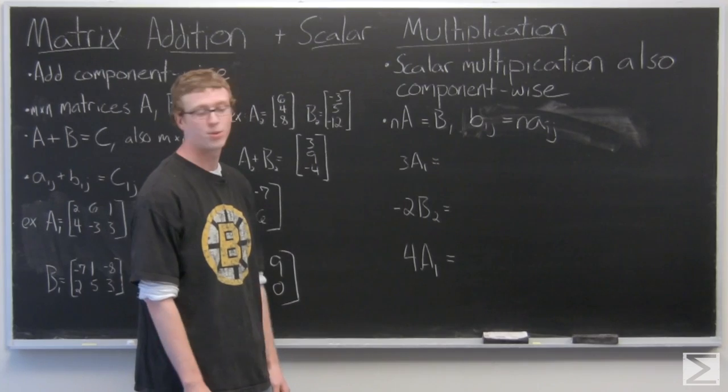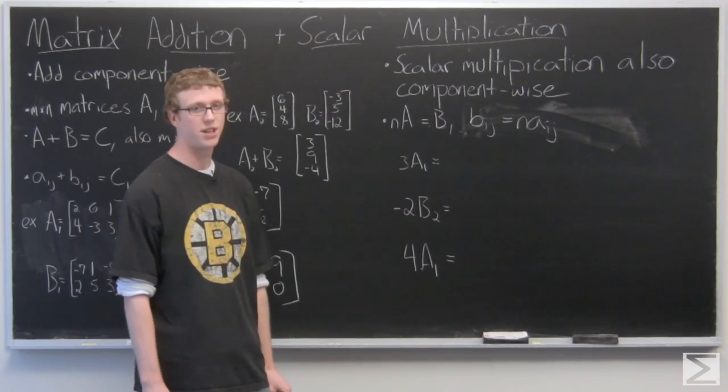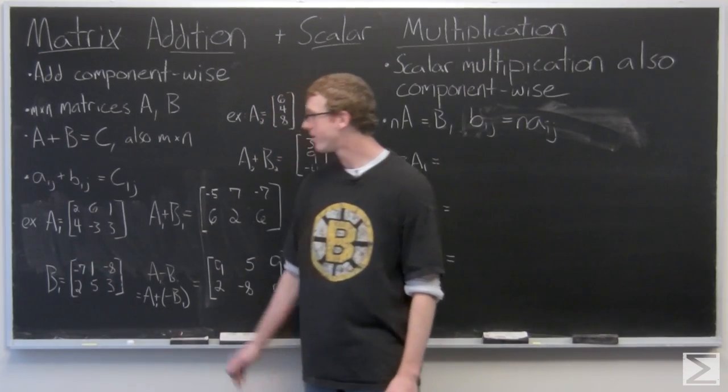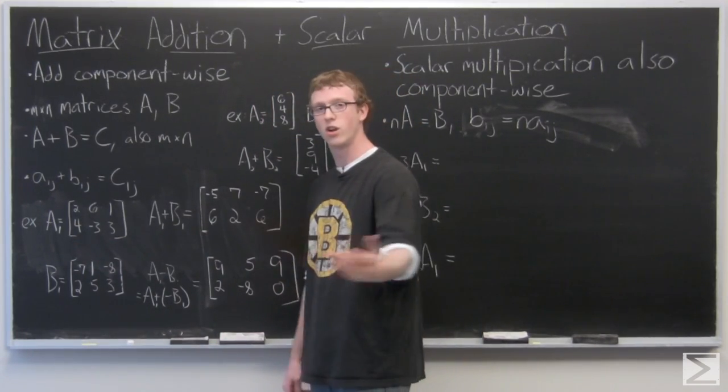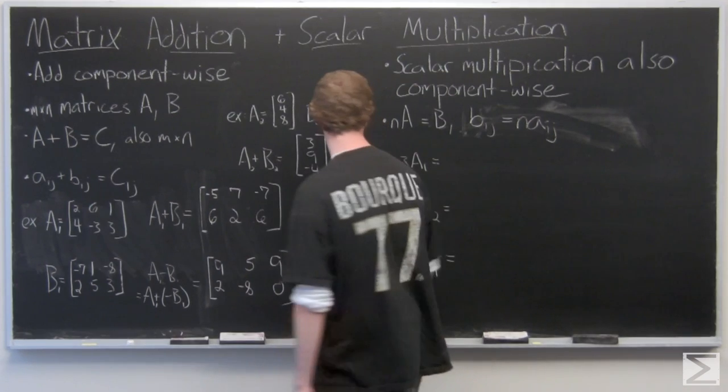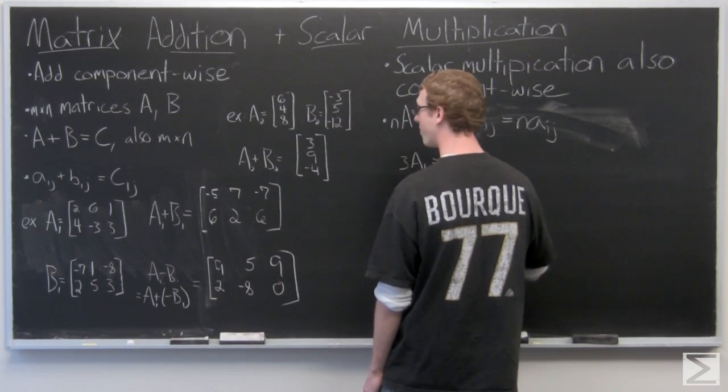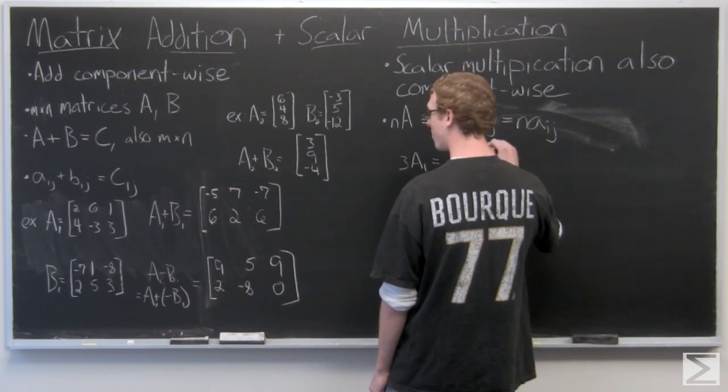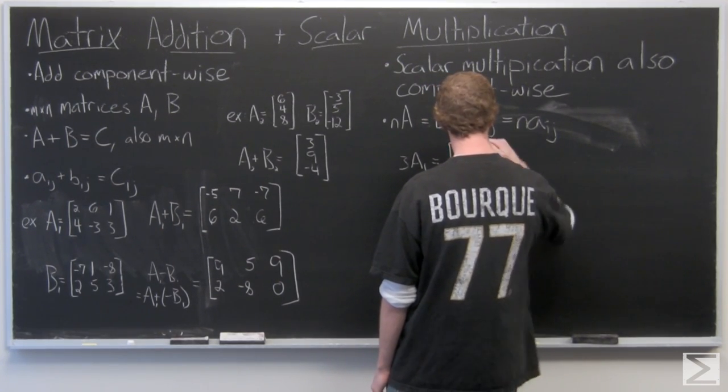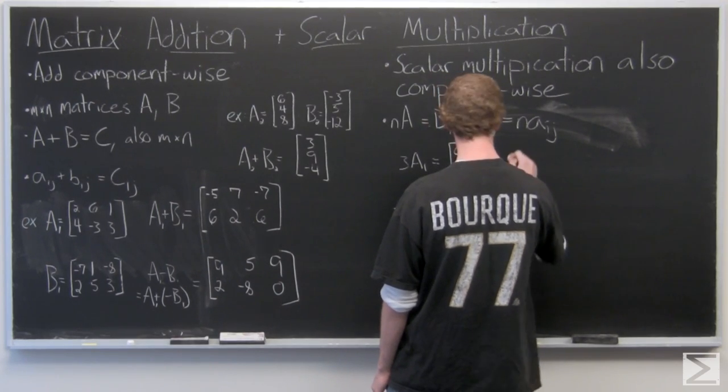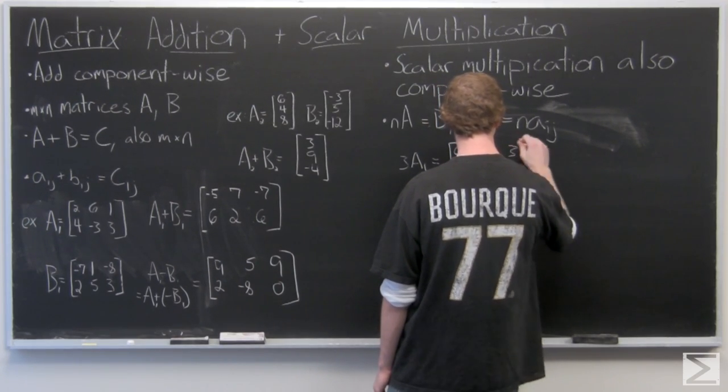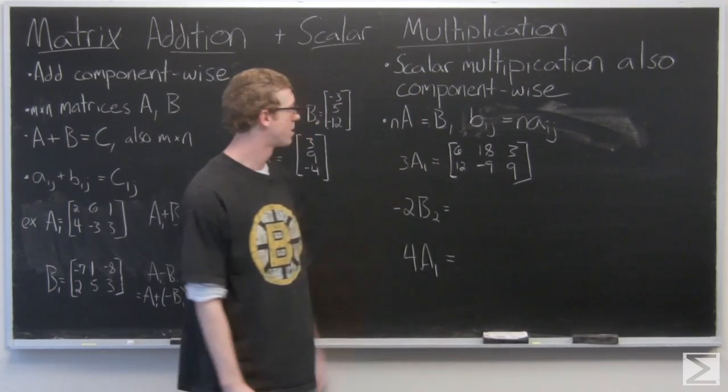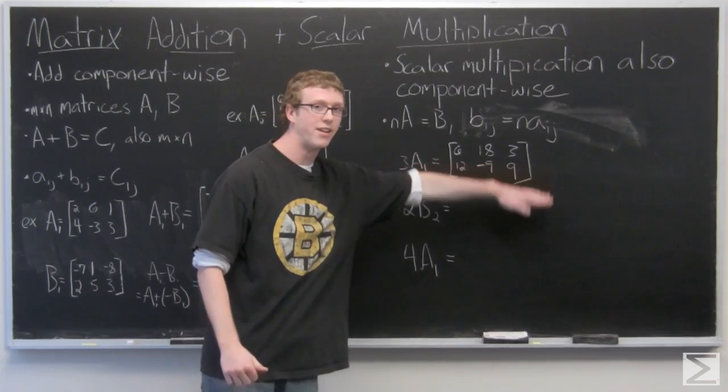So we'll just take a look at some examples. It's easiest to demonstrate scalar multiplication through that. So we have 3 times A1. Remember A1 over here? All you do is multiply each component by 3. So the resultant matrix is also a 2 by 3 matrix: 6, 18, 3, 12, negative 9, 9.